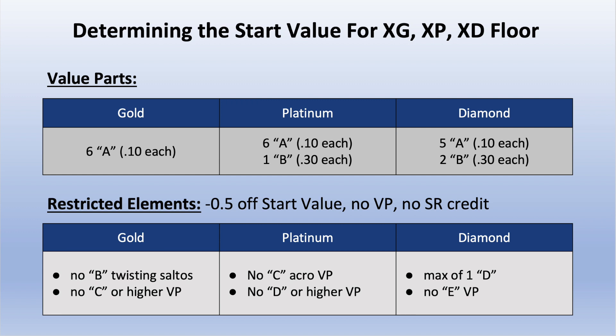Determining the start value for Gold, Platinum, and Diamond floor value parts: Gold needs 6 A's; Platinum needs 6 A's and 1 B; Diamond needs 5 A's and 2 B's. Restricted elements equal 5 tenths off the start value — no value part and no special requirement credit. In Gold that means no B twisting saltos and no C's or higher. In Platinum it's no C acro value parts and no D's or higher. In Diamond there's a max of 1 D allowed and no E's.